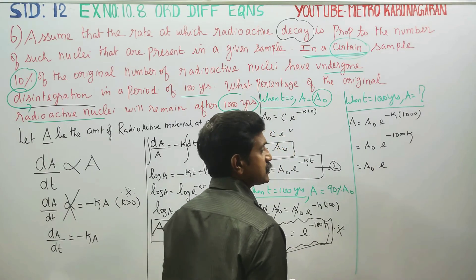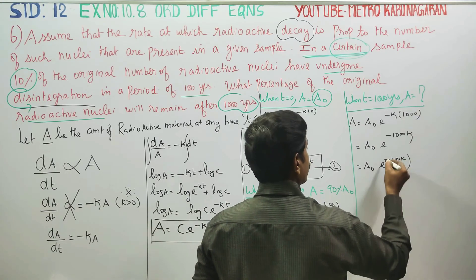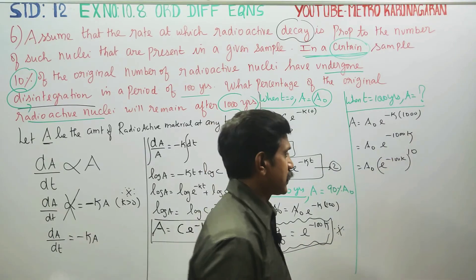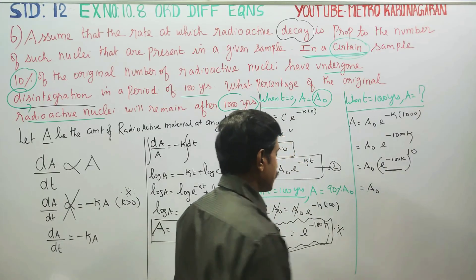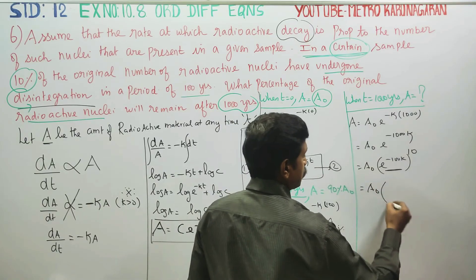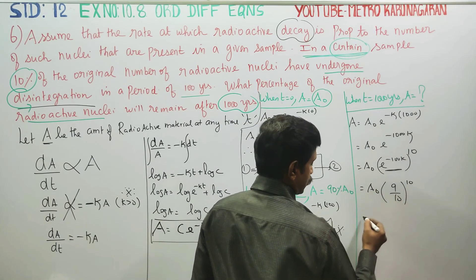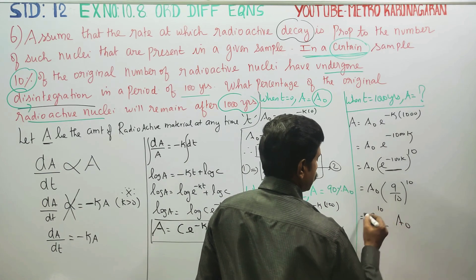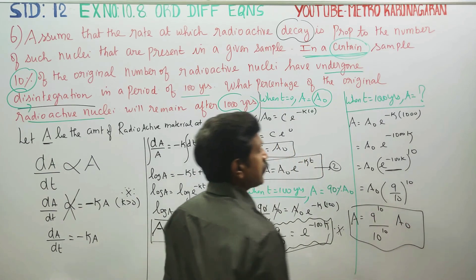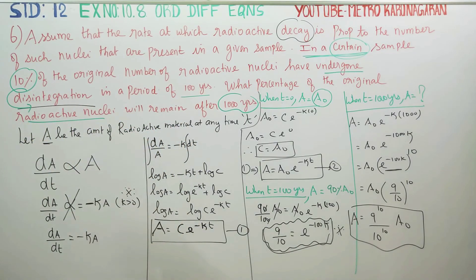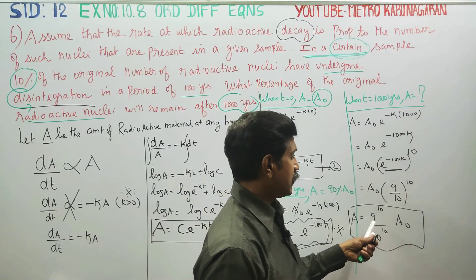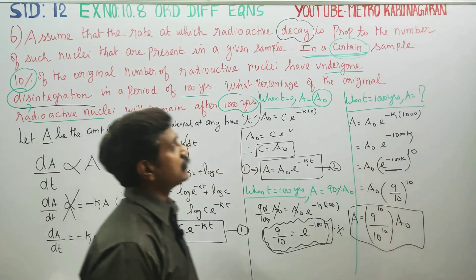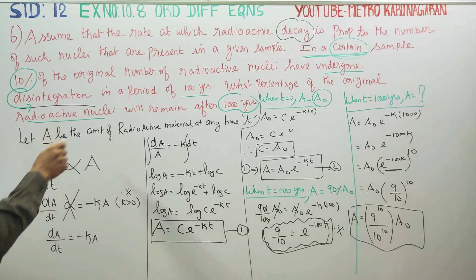Now for t equals 1000 years: A equals A0·e^(minus 1000k). We can write e^(minus 1000k) as (e^(minus 100k))^10. Since e^(minus 100k) equals 9/10, we get A equals A0·(9/10)^10, which equals A0·9^10 divided by 10^10. This is the final amount after 1000 years.